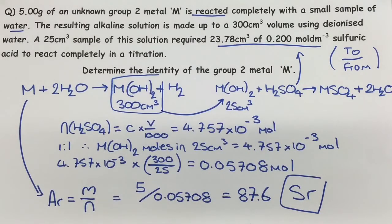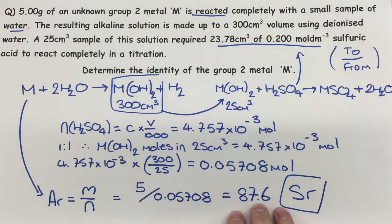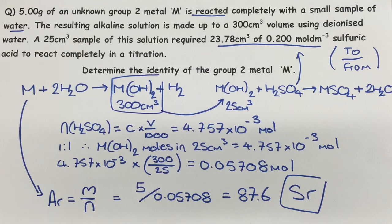And this is of course strontium — you can look that up on your periodic table. This gives you an example of an unstructured mole question, how we can write out equations and plan a journey from one side of the problem to the other. Make sure your working out is nice and clear — mine here is obvious and I've got to the final answer at the bottom. For an OCR paper, remember this will normally go on the dotted line to make it easy for the examiner to mark.